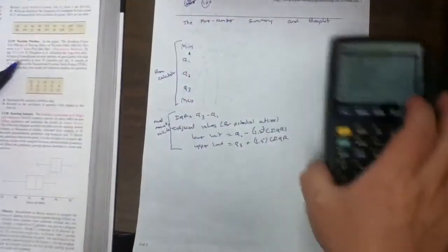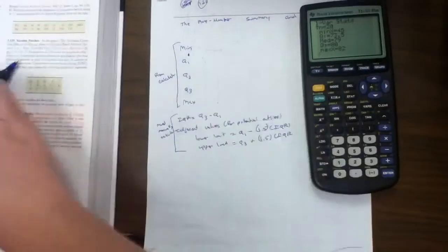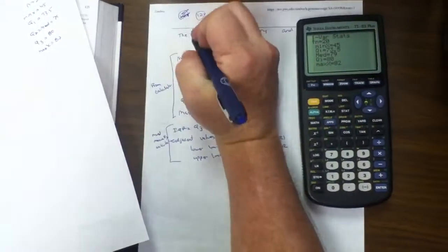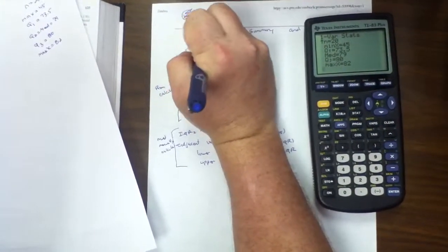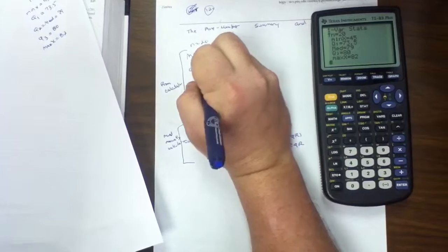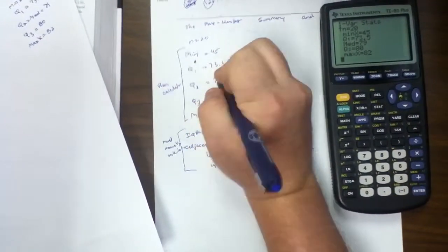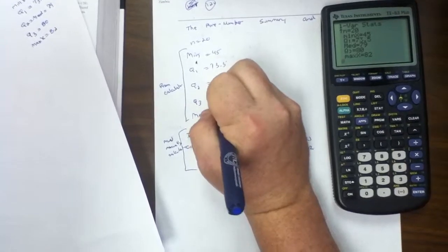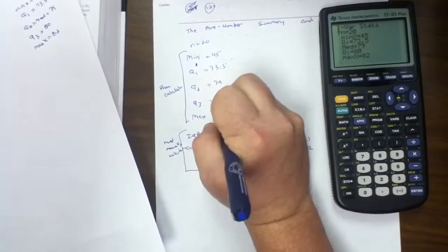Now, I'm going to take this, transfer it over to my new paper here. So we have it together. Min is 45. Q1 is 73.5. Q2 is 79. Q3 is 80. And max is 82.